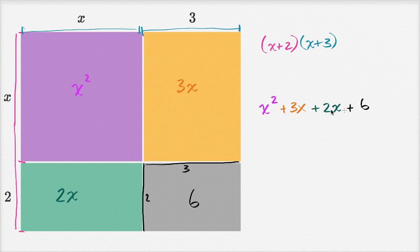And you might say, well, this isn't a trinomial. This has four terms right over here. But you might notice that we can add these middle two terms. Three x plus two x. If I have three x's and I add two x's to that, I'm going to have five x's.